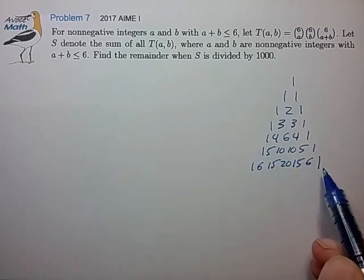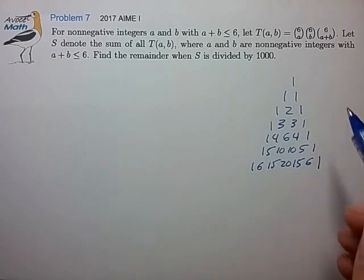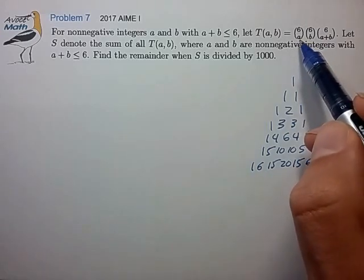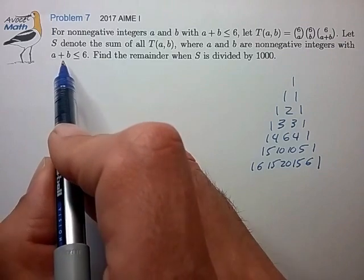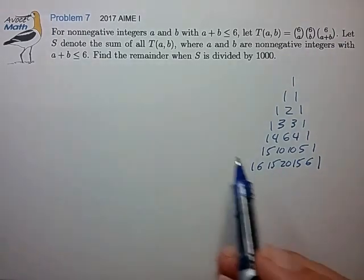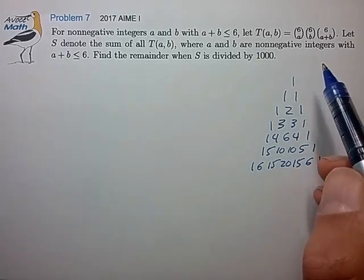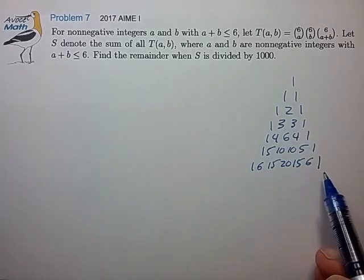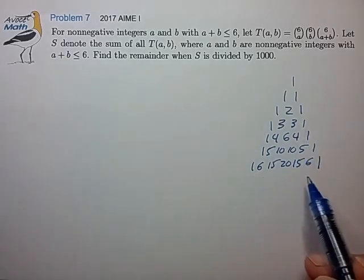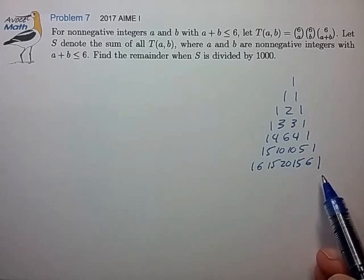So all these numbers are taken from the sixth row. And it looks like we could form the various products for a plus b less than or equal to 6. And that would be 28 such products taken from the numbers in the sixth row.